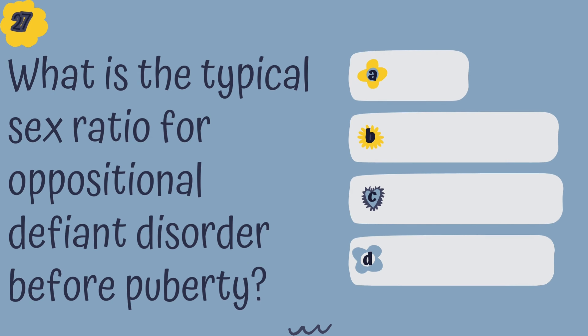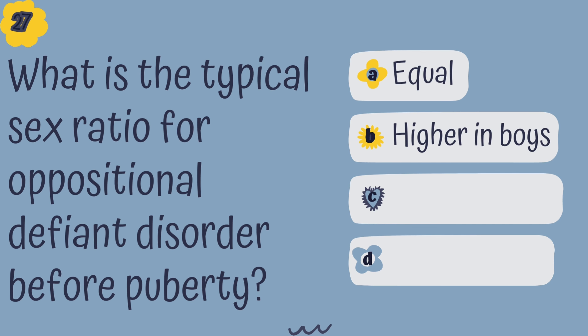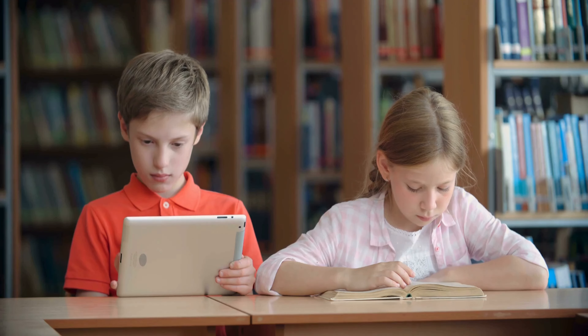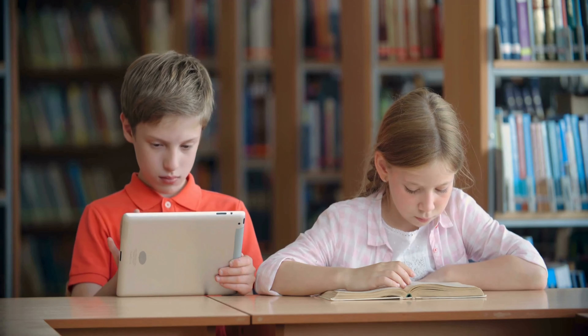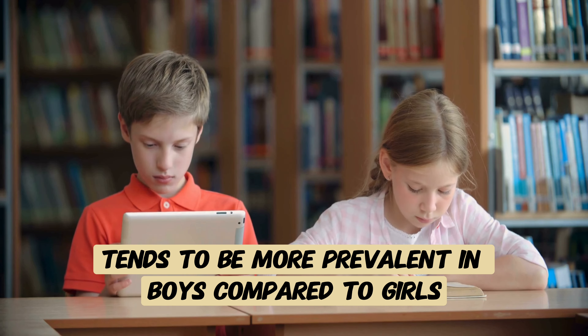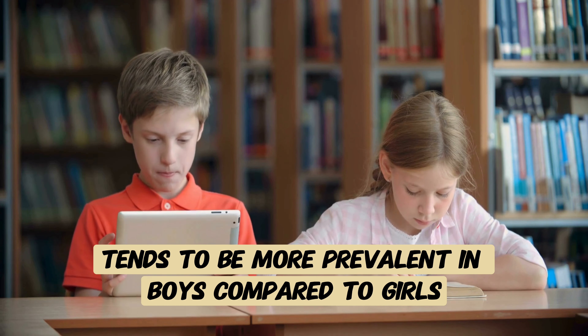Question 27. What is the typical sex ratio for ODD before puberty? A. Equal, B. Higher in boys, C. Higher in girls, or D. Not specified. The correct answer is B, higher in boys. Before puberty, oppositional defiant disorder tends to be more prevalent in boys compared to girls.